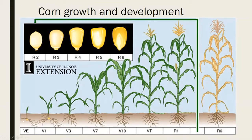Over here on your left is what we call the VE stage — E stands for emergence. This is when the corn just pops out of the ground. The next stage is V1. There are a number of different schools of thought on how to stage corn. Some agronomists prefer what's called the droopy leaf method, where you basically count leaves that have a droop to them like you see here.